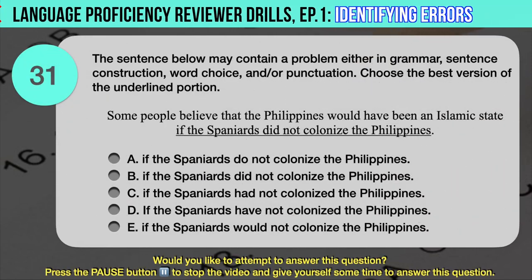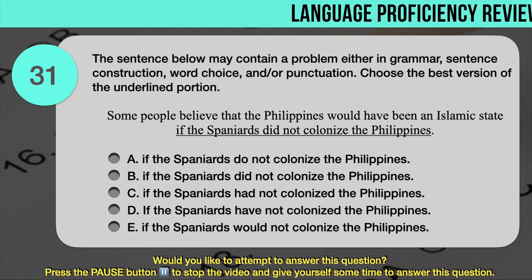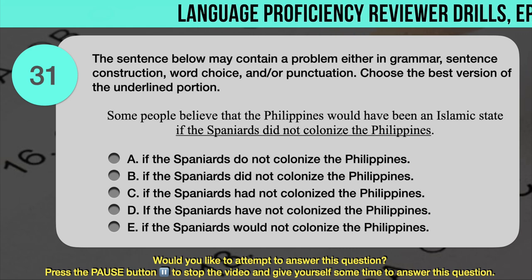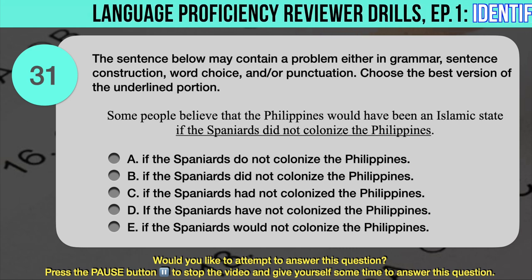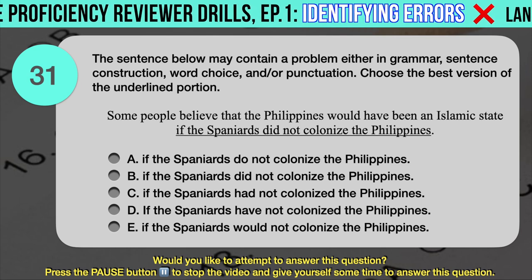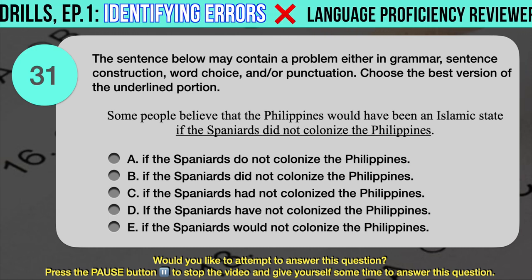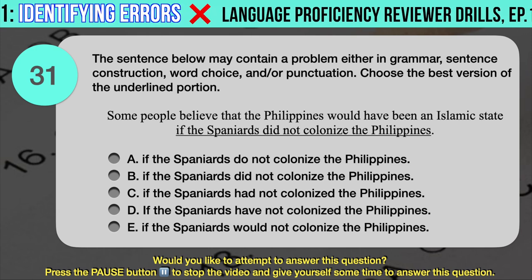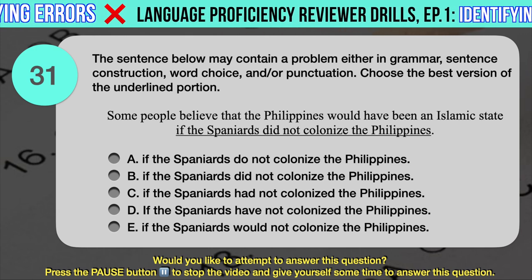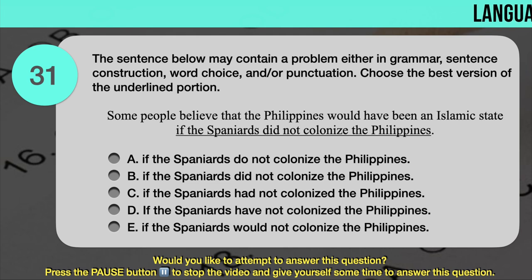Drill question number 31. Choose the best version of the underlined portion. 'Some people believe that the Philippines would have been an Islamic state if the Spaniards did not colonize the Philippines.' The underlined portion is 'if the Spaniards did not colonize the Philippines.' Answer choices: A. If the Spaniards do not colonize the Philippines. B. If the Spaniards did not colonize the Philippines. C. If the Spaniards had not colonized the Philippines. D. If the Spaniards have not colonized the Philippines. E. If the Spaniards would not colonize the Philippines.